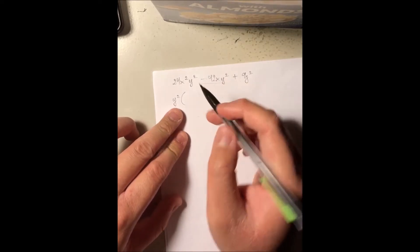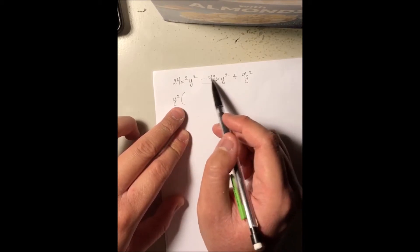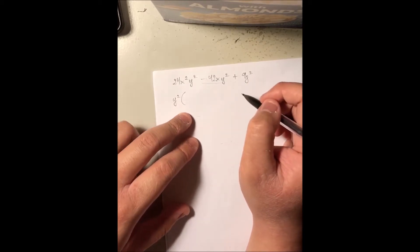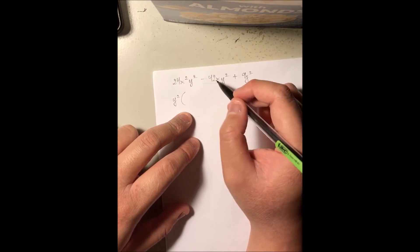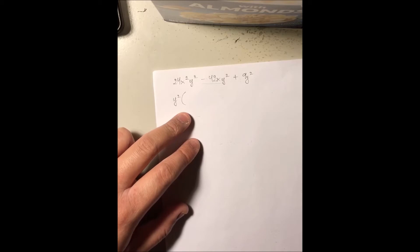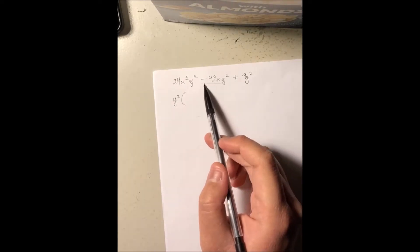Can we factor out anything from the three coefficients? Looking at the smallest coefficient, positive 9 — positive 9 is a factor of itself, but not of negative 42 and 24. So we cannot factor out positive 9.